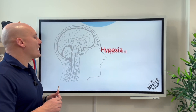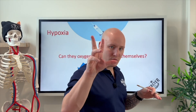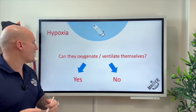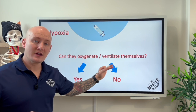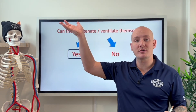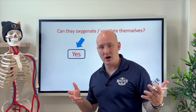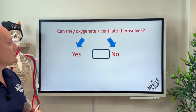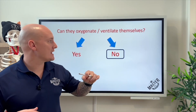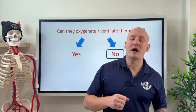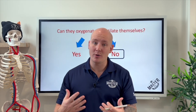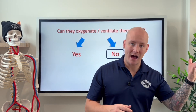Hypoxia can be treated two ways: oxygenation and ventilation. First, ask yourself — can this patient oxygenate or ventilate themselves? If yes, place a non-rebreather mask and get their oxygen as high as possible. If they cannot oxygenate or ventilate themselves, we need to intervene with mechanical ventilation using a BVM with high-flow oxygen.